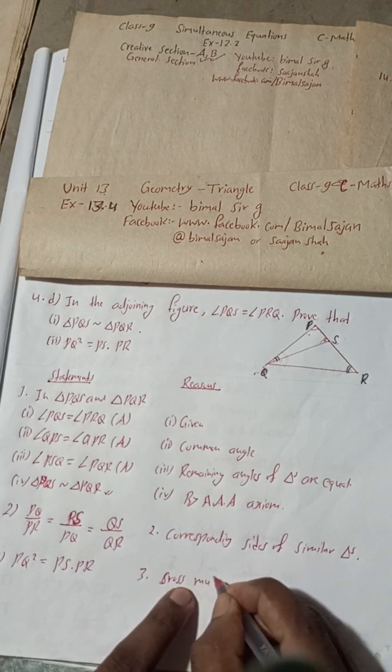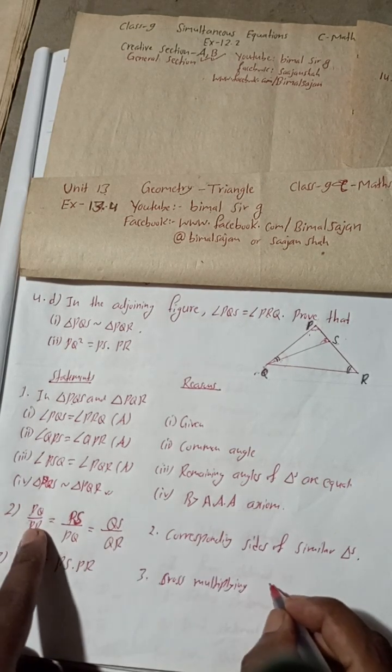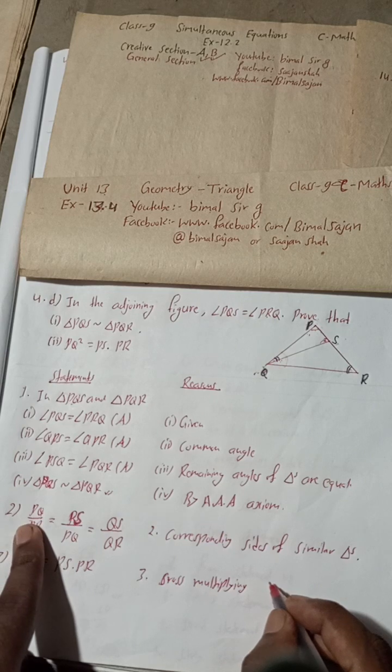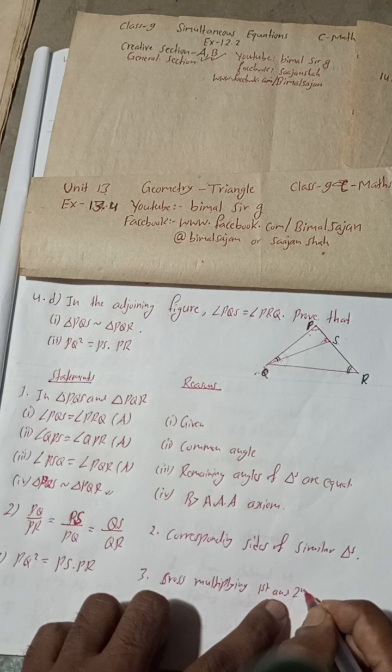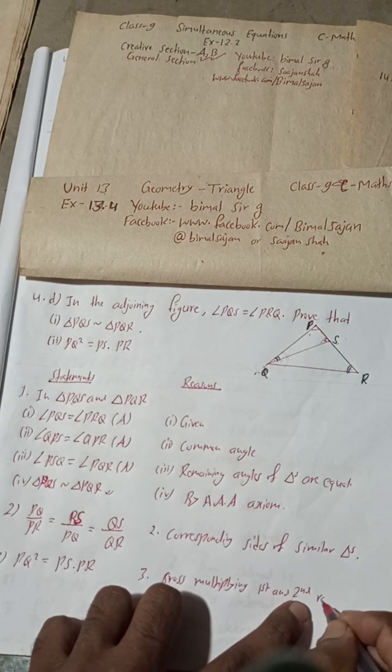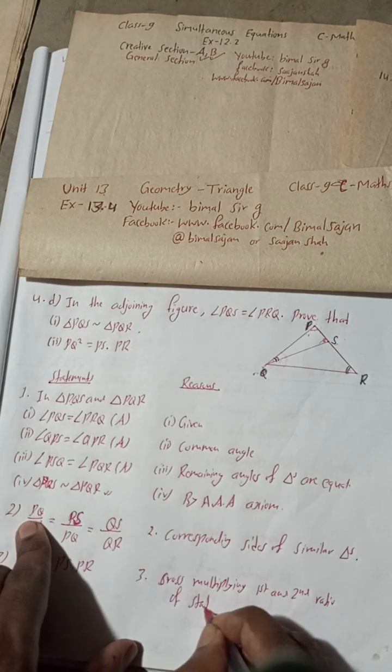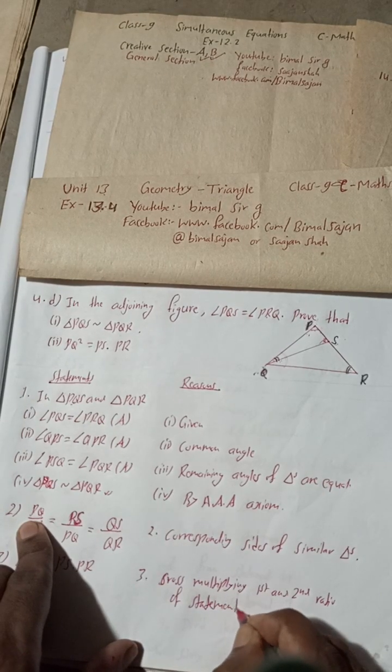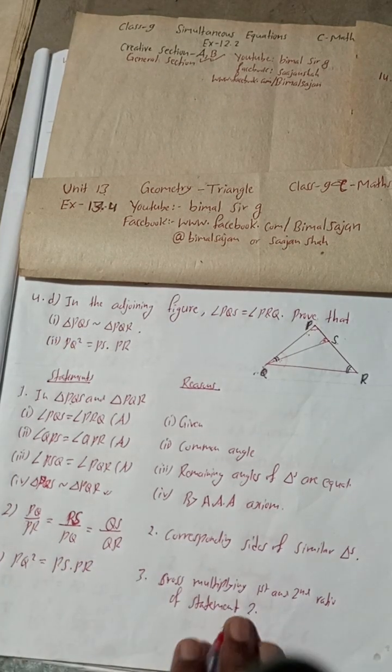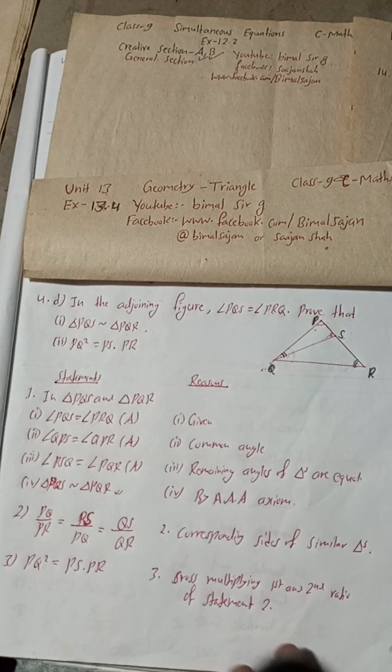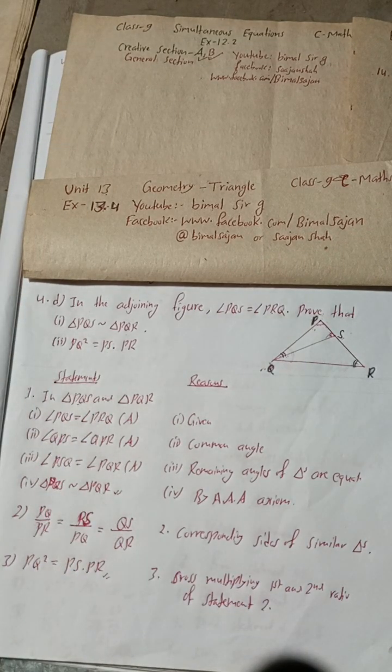So we got here the reason for this is what? Solving statement 2, or cross multiplying first and second ratio of statement 2. Or simply you can write from statement 2. So this is also proved. So this is the complete solution.